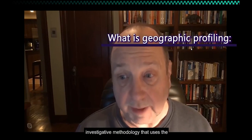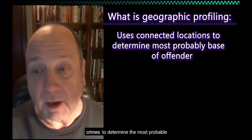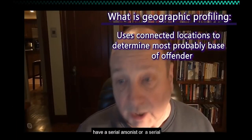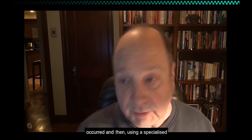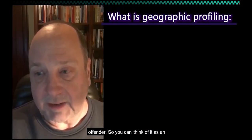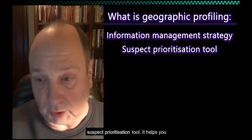Geographic profiling is a criminal investigative methodology that uses the locations of a connected series of crimes to determine the most probable area where the offender responsible for those crimes is based. So let's say we have a serial arsonist, serial robber, or rapist — we analyze the locations where those crimes have occurred, then using specialized software produce maps that show the most likely areas to find the offender. You can think of it as an information management strategy or a suspect prioritization tool — it helps you find the needle in the haystack.